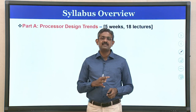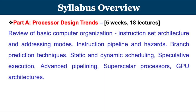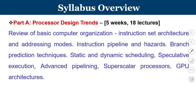The entire course content is divided into three sections. Part A focuses on processor design trends, covering approximately five weeks. We will review basic computer organization including instruction set architecture and addressing modes, instruction pipeline and hazards, branch prediction techniques, and advanced concepts like static and dynamic scheduling, speculative execution, super pipelining, hyper threading, multi-threading, superscalar processors, and GPU architecture in brief.